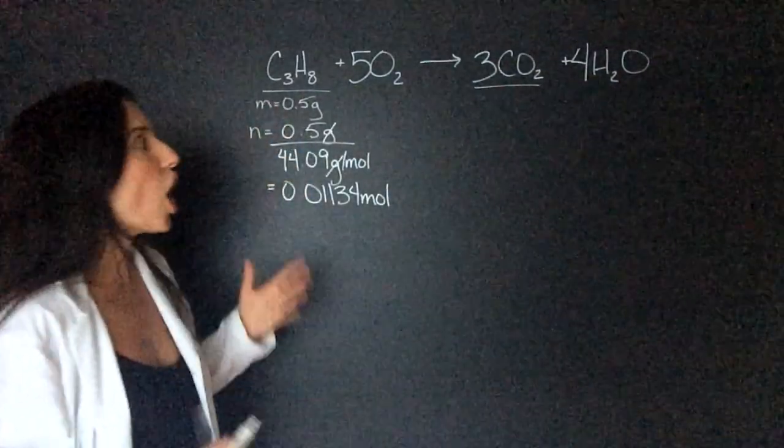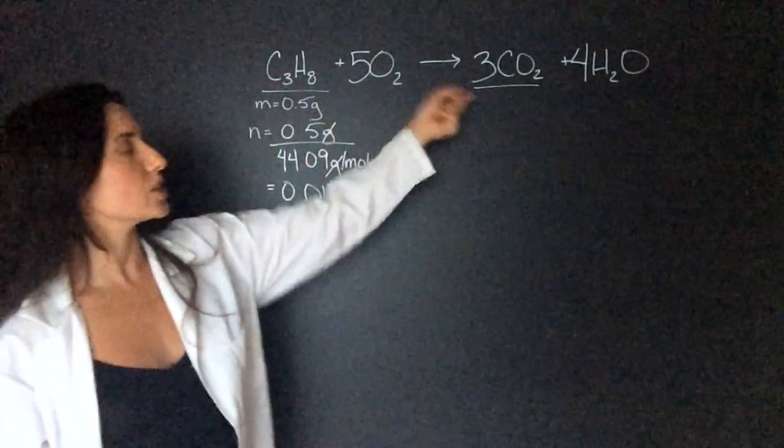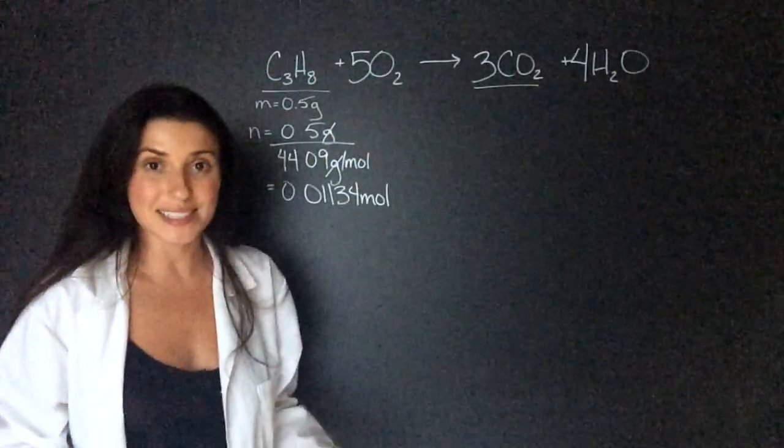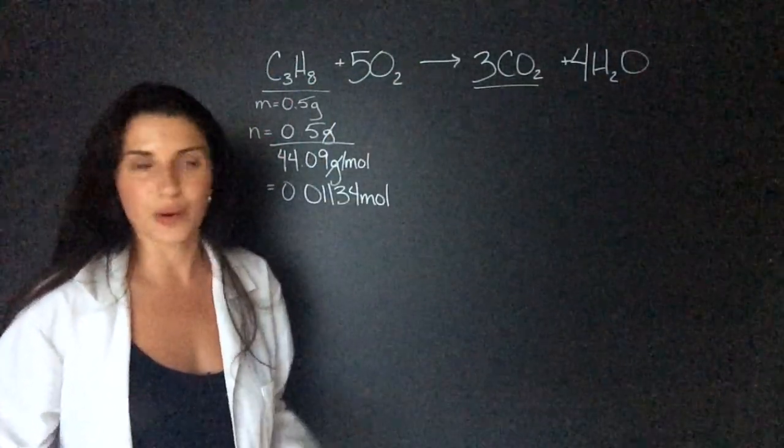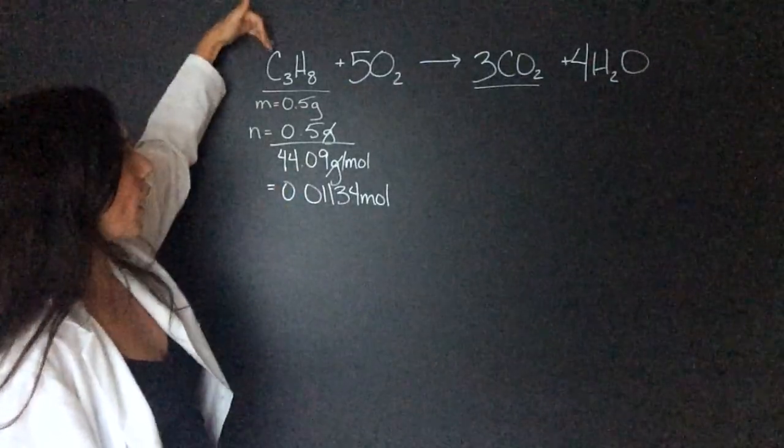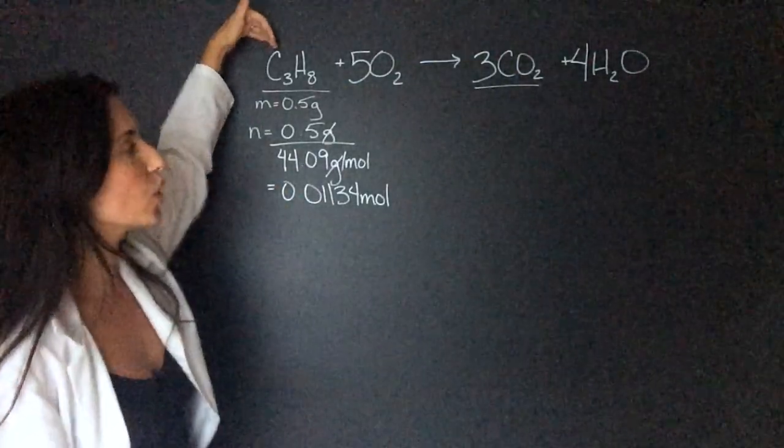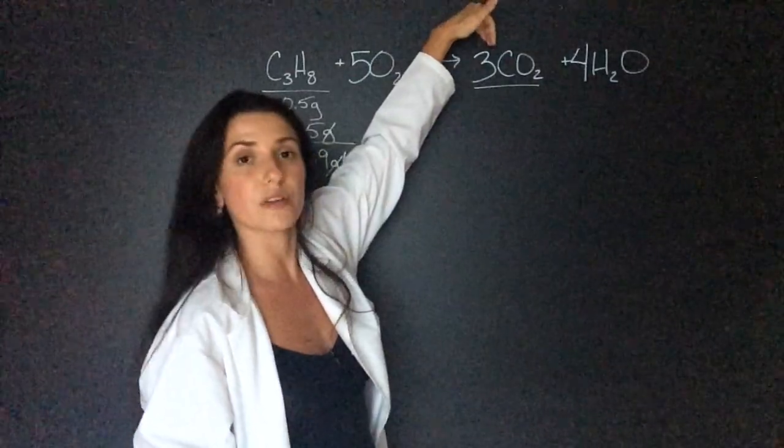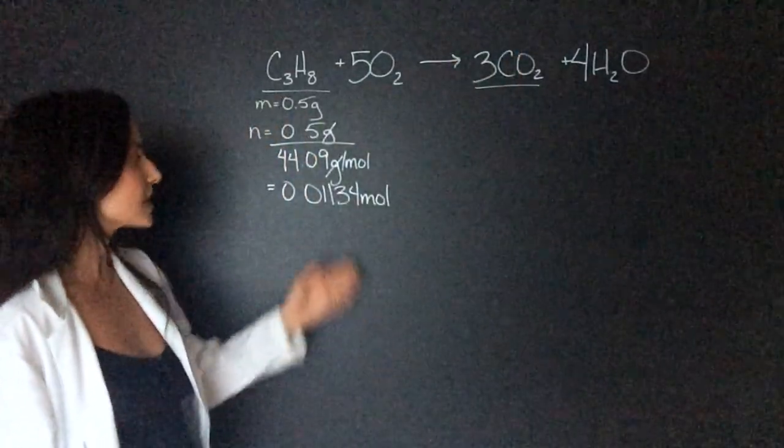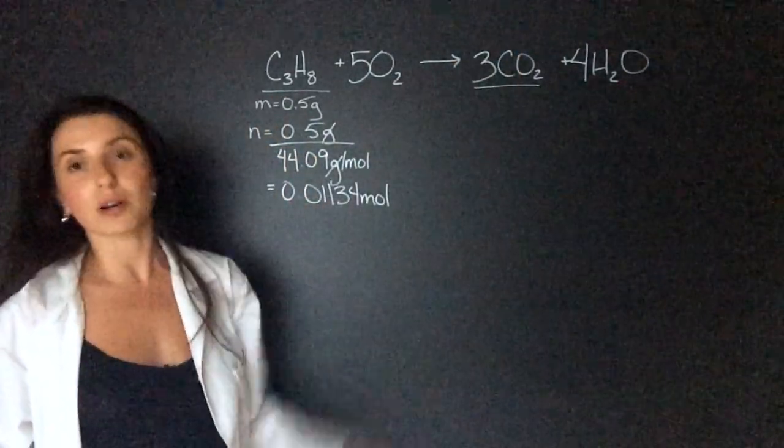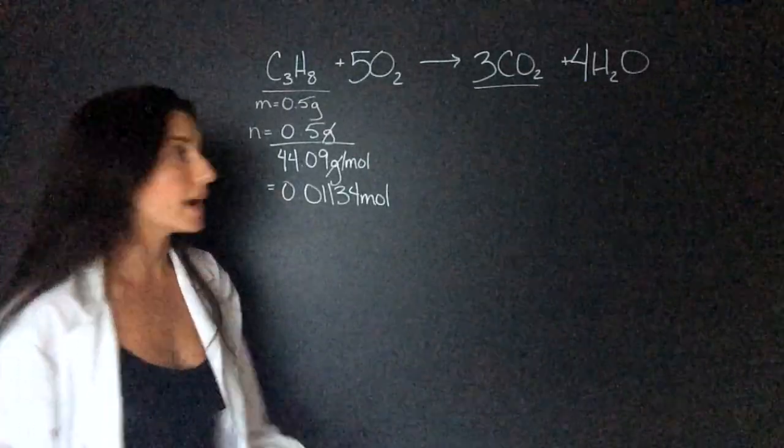Now we have to compare those moles to the moles of carbon dioxide. All we have to do is look at the ratio of coefficients. If we balance this formula properly we'll get the right answer. So for every one mole of propane we're going to get three moles of carbon dioxide. So we just have to take this number and multiply it by three, and when I do that I get 0.034 moles.